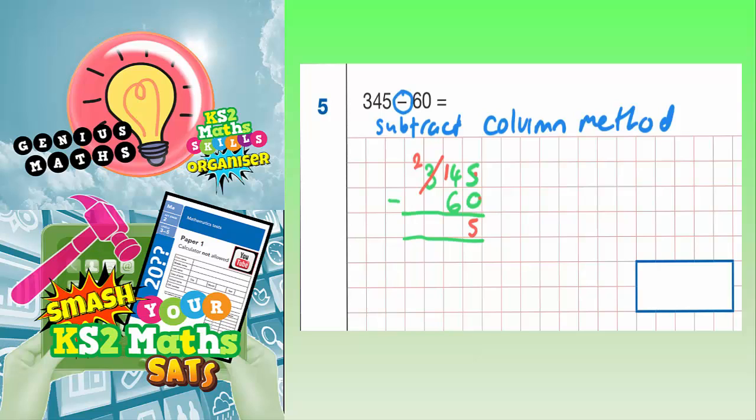Now we can continue. 14 subtract 6 is 8, and 2 subtract nothing—well, there's a blank space here, so we could replace that with a 0—2 subtract nothing is 2. So your final answer is 285, and we just need to write that in the answer box.